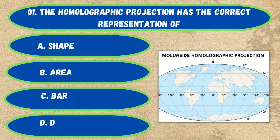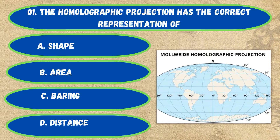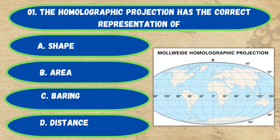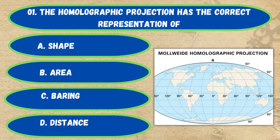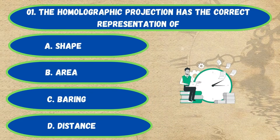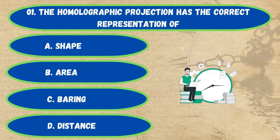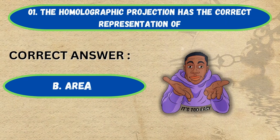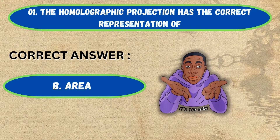Question number 1. The homolographic projection has the correct representation of: option A, shape; B, area; C, bearing; D, distance. The correct answer is option B, area.